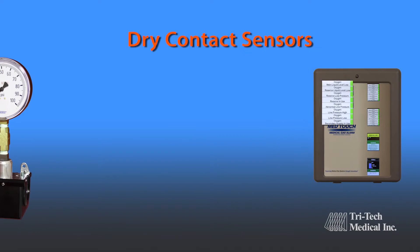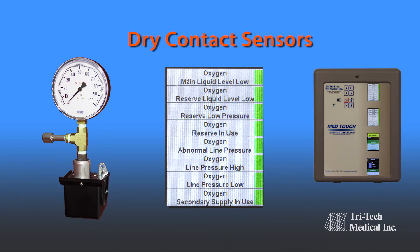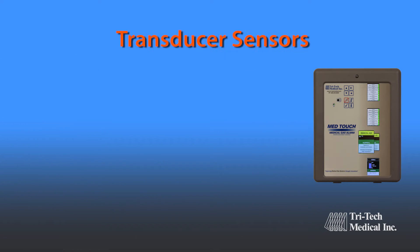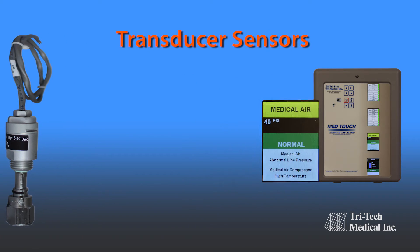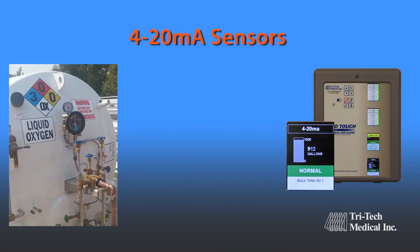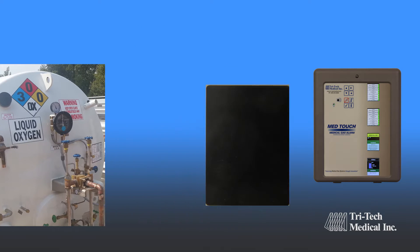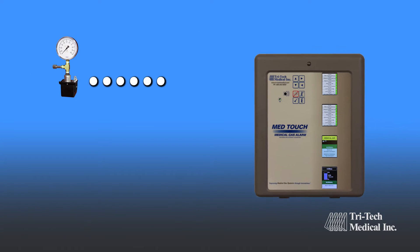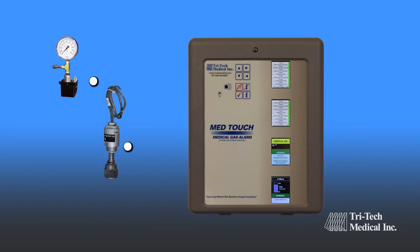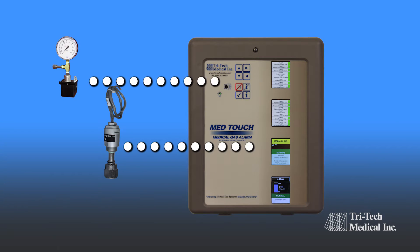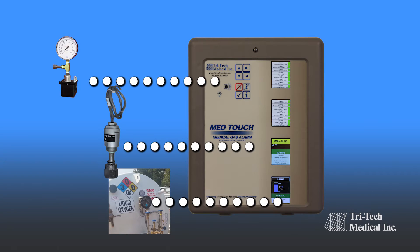Engineers and facilities have the choice of traditional dry contact sensors, transducer sensors, and 4 to 20 milliamp sensors, which can dynamically display liquid level, oxygen concentration, and numerous other applications. All three of these technologies may be incorporated into the same master alarm panel, providing additional vital information not previously available with dry contact only alarm systems.